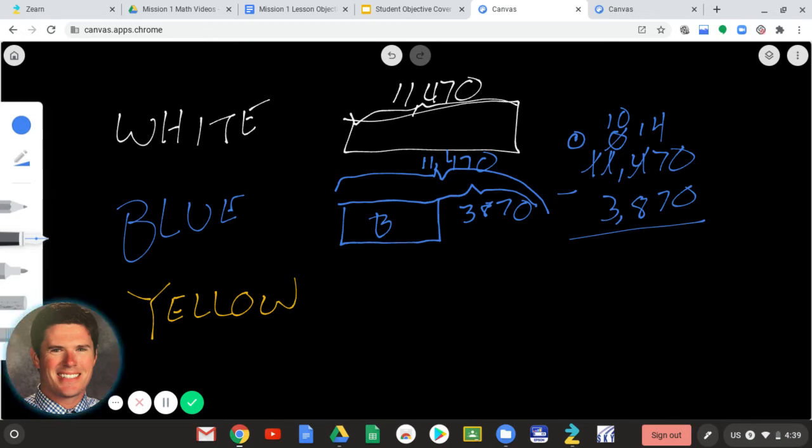So, now I can say 0 minus 0 is 0, and I can say 7 minus 7 is 0, 14 minus 8 is 6, 10 minus 3 is 7, and 0 minus 0 is 0. So, blue, that B equals 7,600.